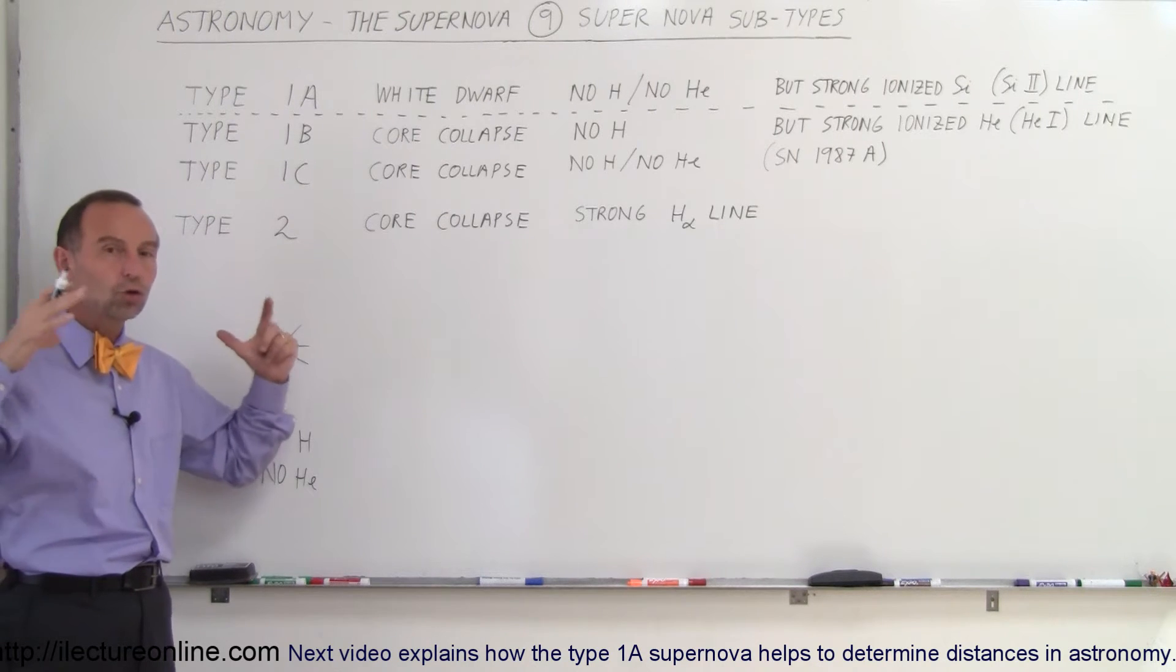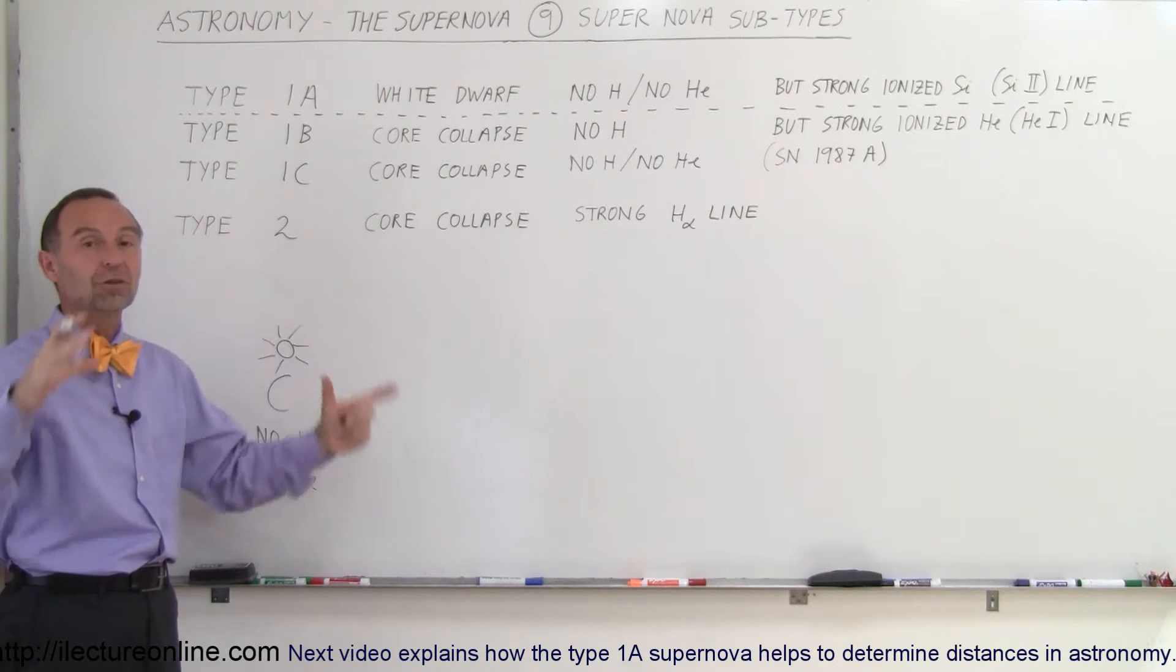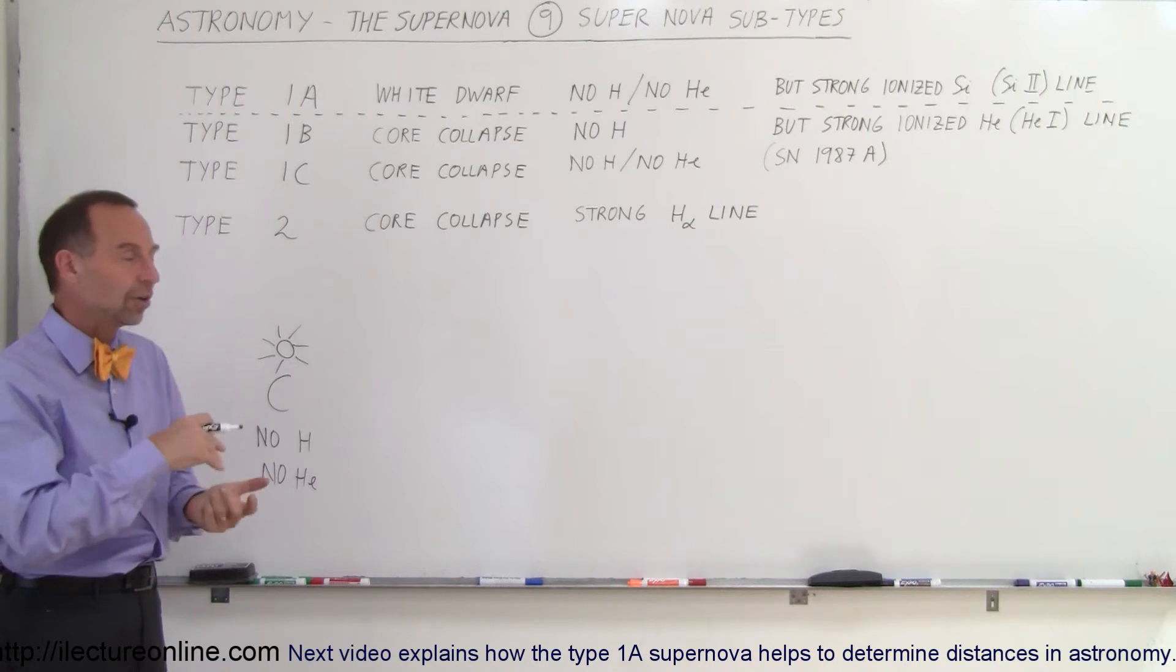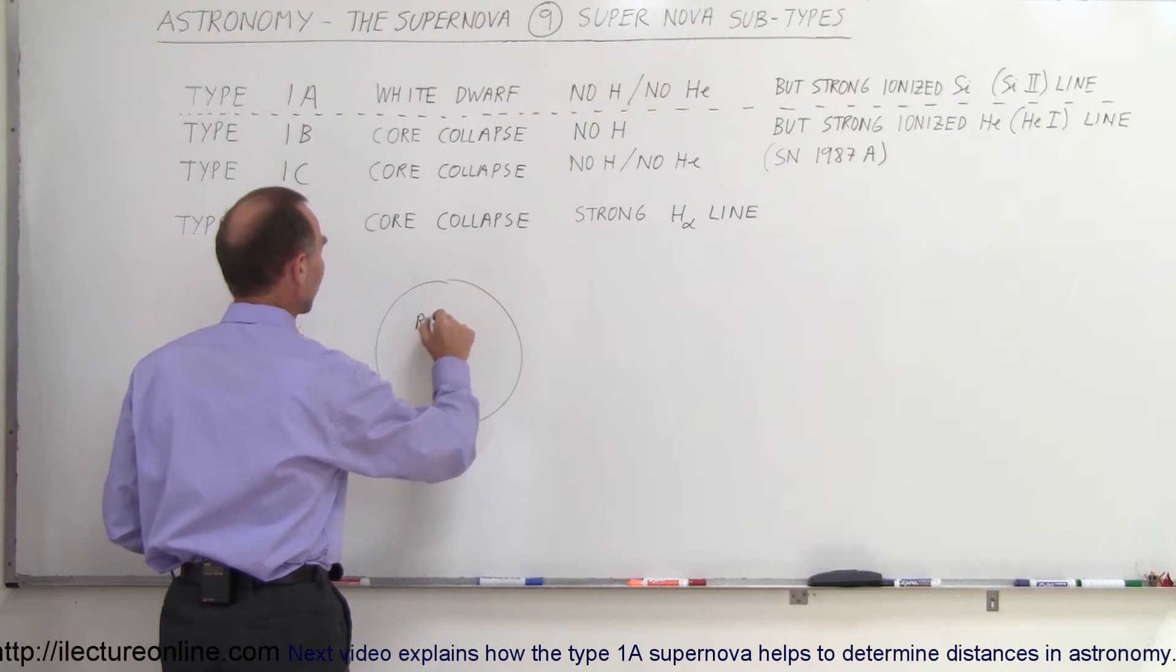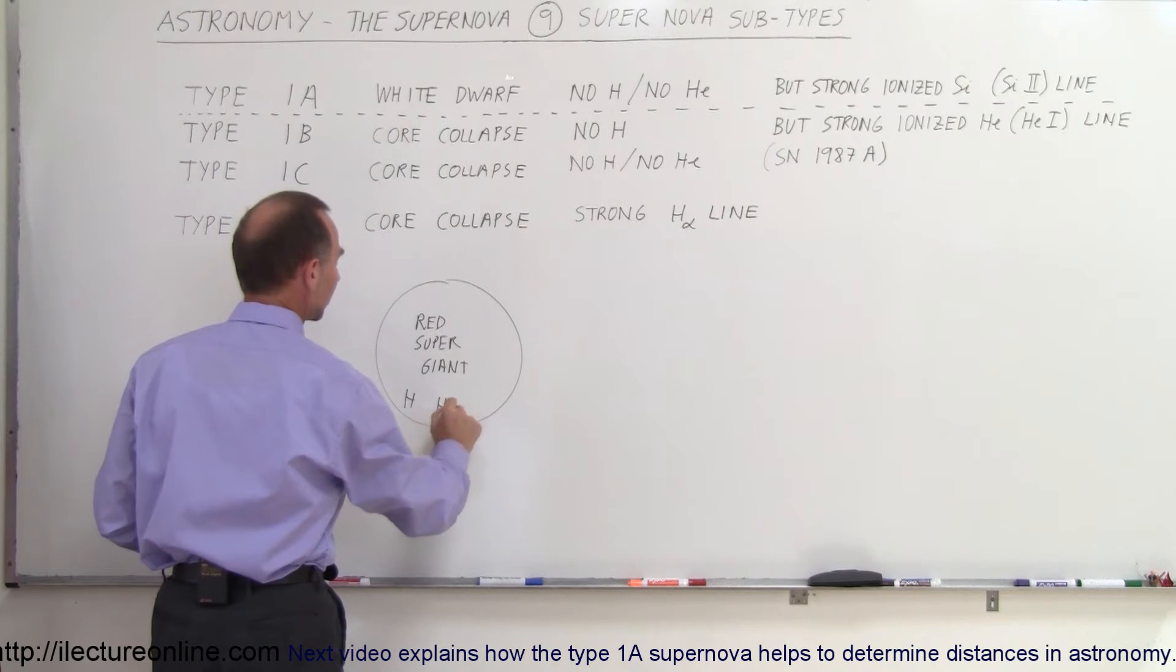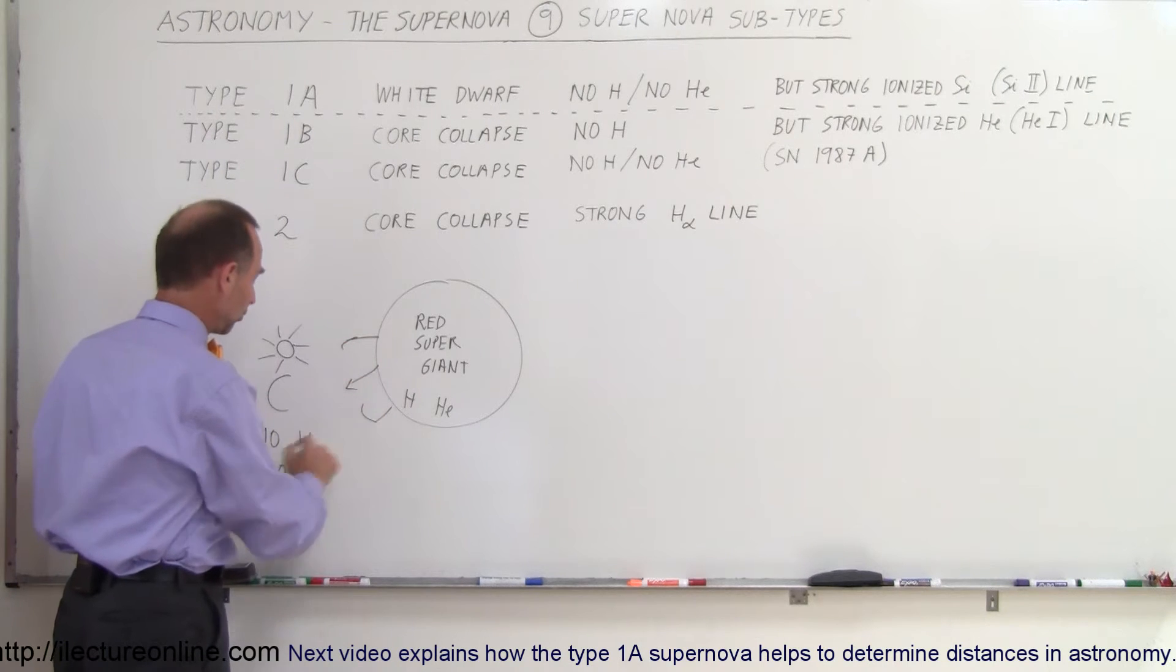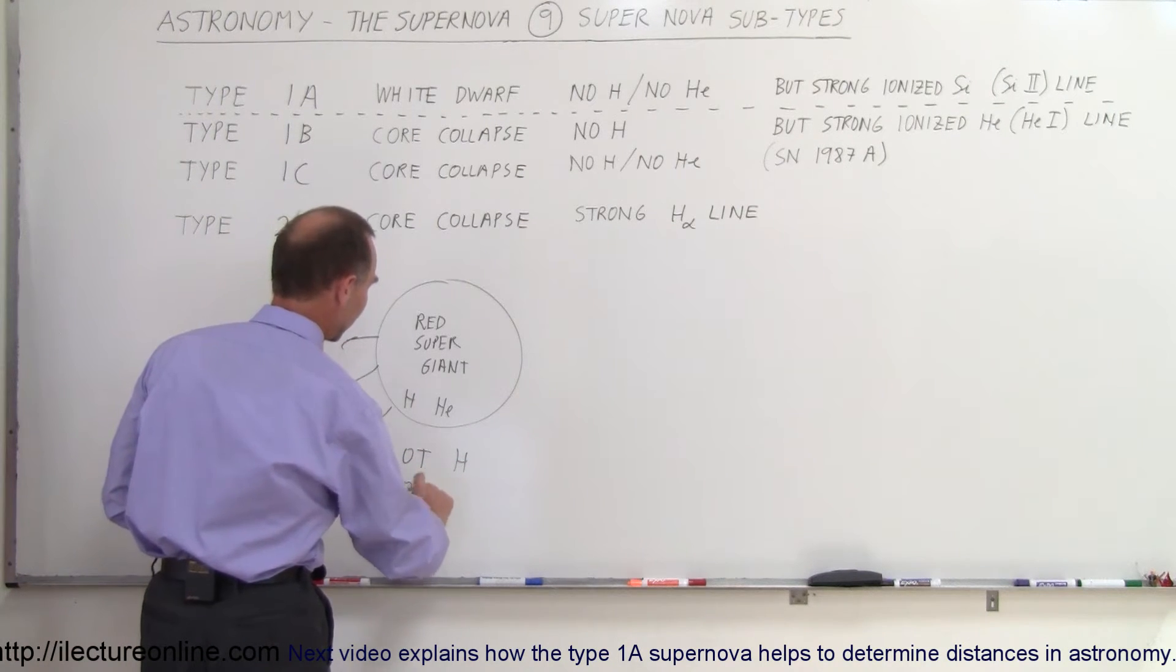With a large core collapse explosion like a Type 2 supernova, the outer layers of the star have so much hydrogen and helium in them that we expect to see lots of signatures. They have a red super giant, and when it explodes, there's so much hydrogen and helium contained within the outer layers of the star that when it explodes you would expect to see those signatures. There's a lot of hydrogen and a lot of helium signatures in the explosion.